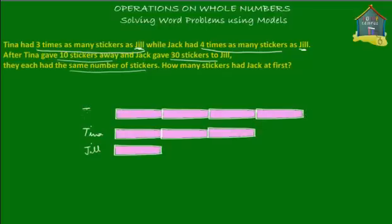Next, what do we know? We know that Tina gave ten stickers away — the brown shaded part here represents the ten stickers Tina gave away. And Jack gave thirty stickers to Jill. After Tina gave ten stickers away and Jack gave thirty stickers to Jill, they each had the same number of stickers.